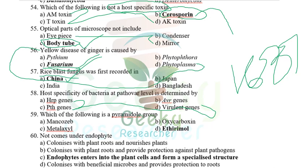Which of the following is a pyramidal group of fungicide? Mancozeb and metalaxyl are different groups. Dimethomorph and others in that class come under the pyramidal group of fungicides. Endophytes colonize plant roots and provide protection — which of the following is NOT characteristic of endophytes?